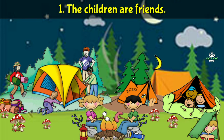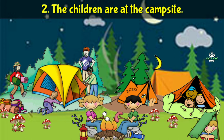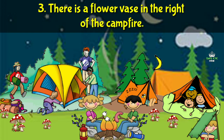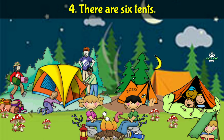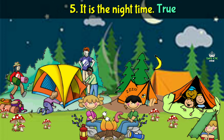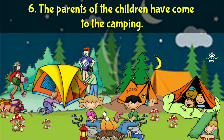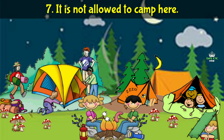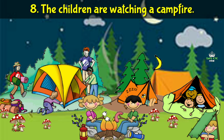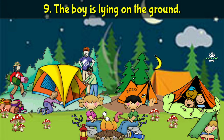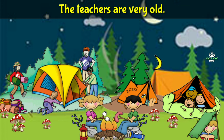Say true or false. The children are friends — true. The children are at the campsite — true. There is a flower wash on the right of the campfire — false. There are six tents — false. It is nighttime — true. The parents of the children have come to the camping — false. It is not allowed to camp here — false. The children are watching a campfire — true. The boy is lying on the ground — false. The teachers are very old — false.